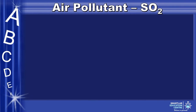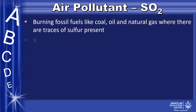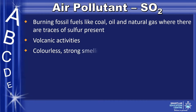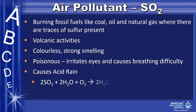Another example of an air pollutant is sulfur dioxide. It is formed during the burning of fossil fuels like coal, oil, and natural gas where there are traces of sulfur present. It can also be formed from volcanic activities. It is colorless and strong-smelling, as well as being poisonous, irritating the eyes and causing breathing difficulty. It also leads to acid rain, as seen in the equation below, forming acidic soil and corrosion.